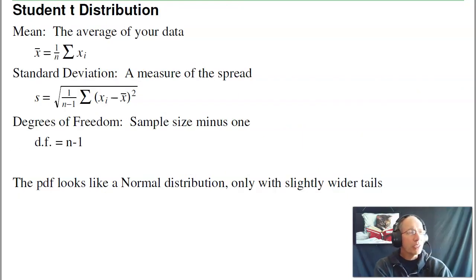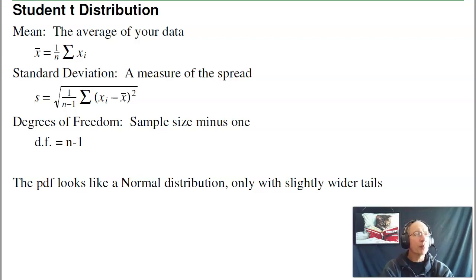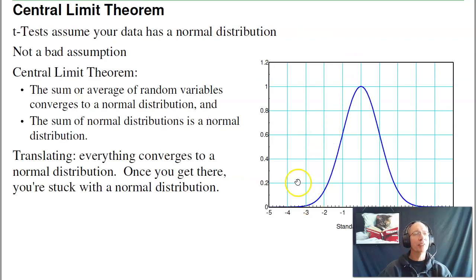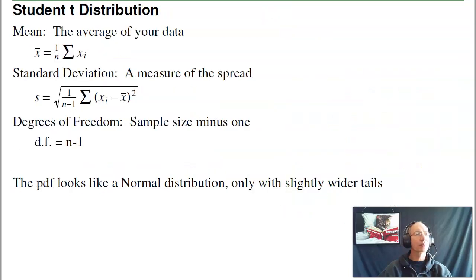A Student T-Test is kind of a generalized normal distribution. If you know the mean and the standard deviation, you have a normal distribution. But if you have to estimate the mean and estimate the standard deviation, that's actually a t-distribution. It looks very much like a normal distribution with the same bell-shaped curve, but it's a little bit flatter — and the less data you have, the more flattened it gets.